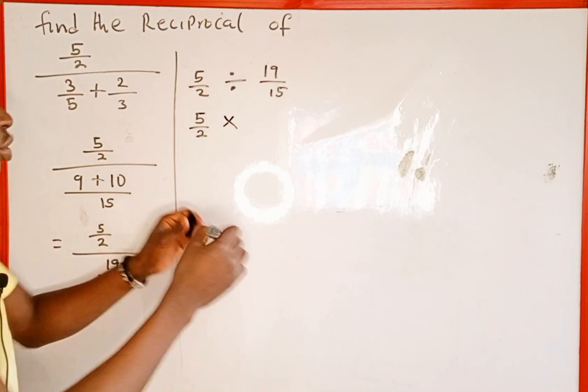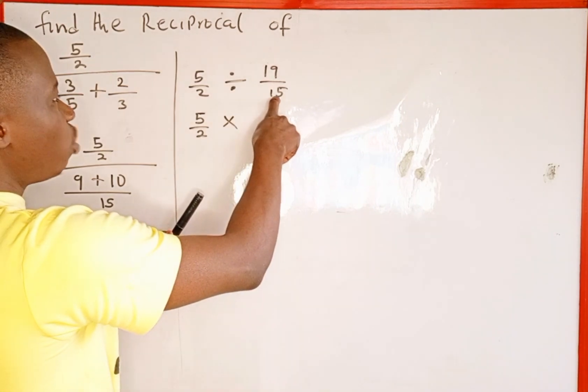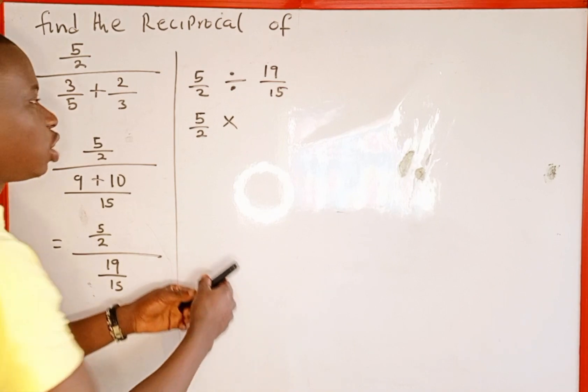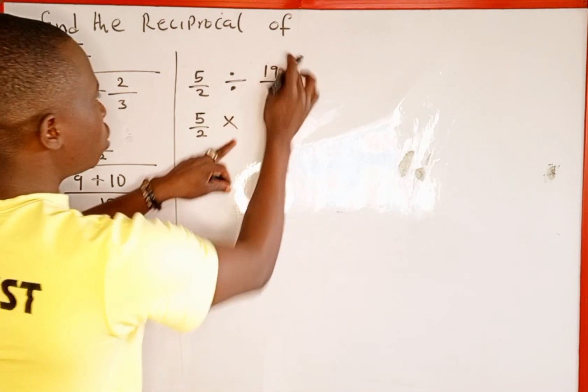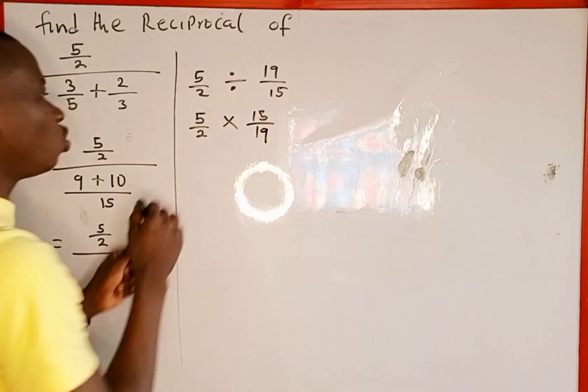And reciprocate, meaning we change this denominator to be numerator, then we bring this numerator to be denominator. We just switch. So this is going to be 15 over 19 instead of 19 over 15.